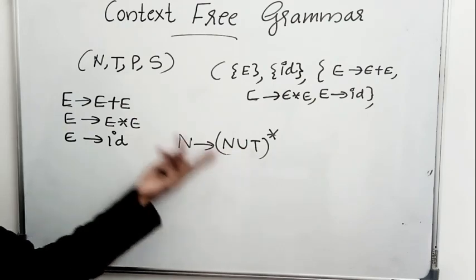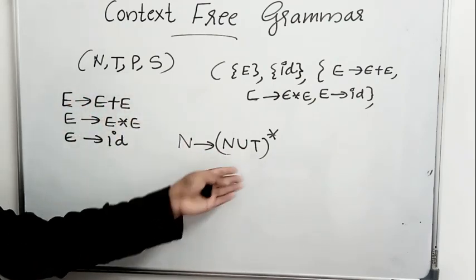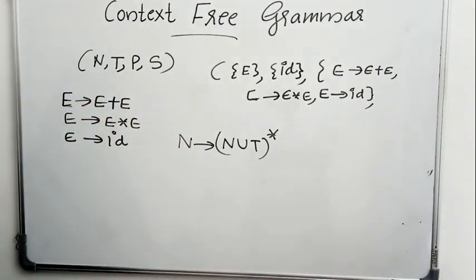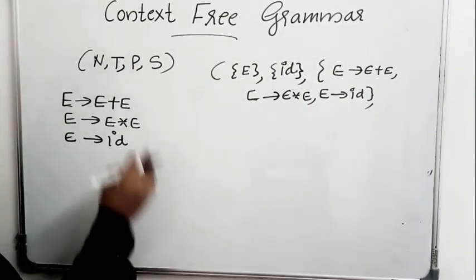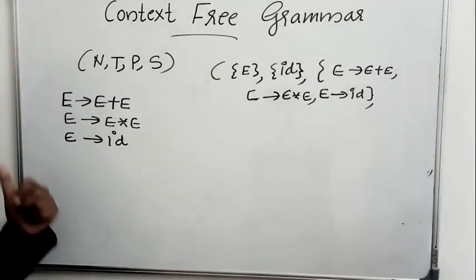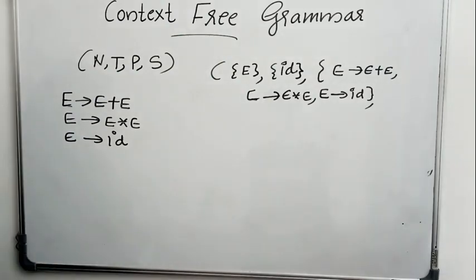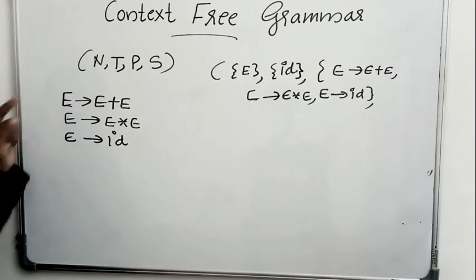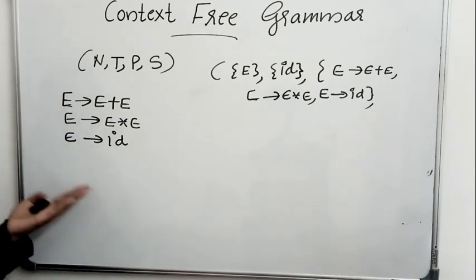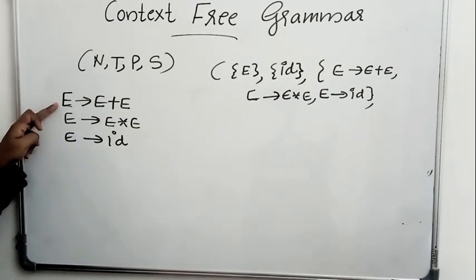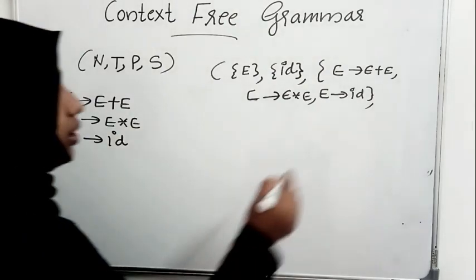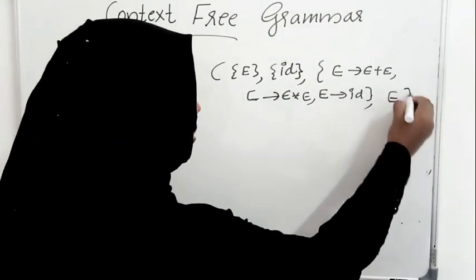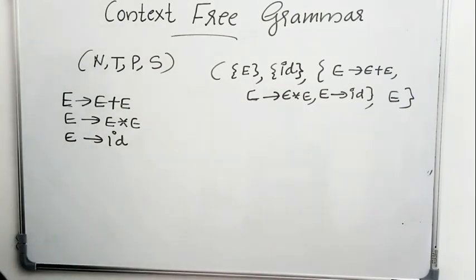On the right-hand side, it can be any string made up of non-terminals and terminals. The start symbol is usually the left-hand side of the first production rule, unless otherwise specified. In this case, no start symbol is specified. The left-hand side of the first production rule is E, so E is the start symbol here. This is how we define a context-free grammar.